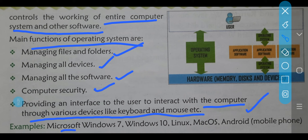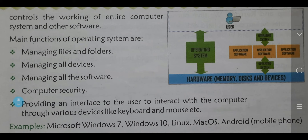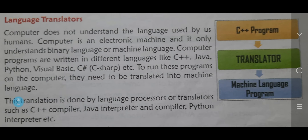Kon kon sa operating system? Microsoft Windows 7 — yeh aapne suna hoga — Windows 10, Linux, Mac OS, Android. Mobile phones mein jo — maine aapko tabhi bola na — jitne bhi android mobile phone hain, har android mobile phone mein operating system compulsory hai, kahi woh present rahega hi. Agar nahi present rahega, to kya hoga — aapka jo android mobile phone hai woh run nahi kar sakega.